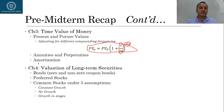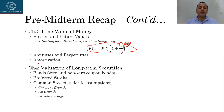Common stock valuation, on the other hand, is a little bit tricky — you have to work with some assumptions. In literature they normally work with three different assumptions: one is constant growth, the other is no growth, and the third is growth in stages.